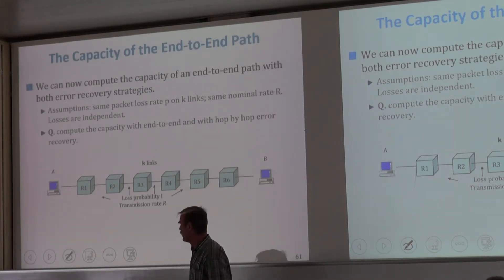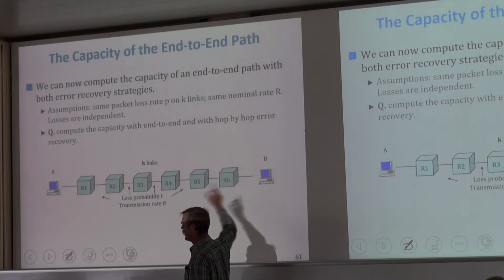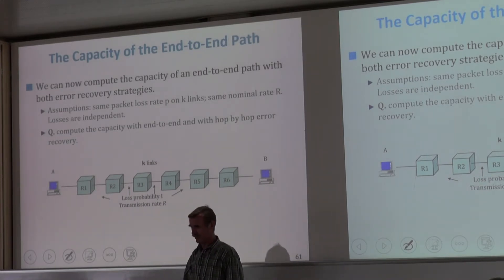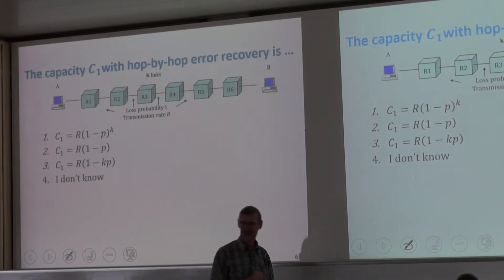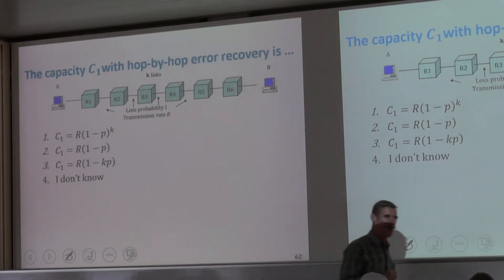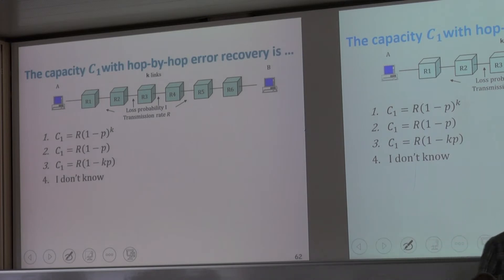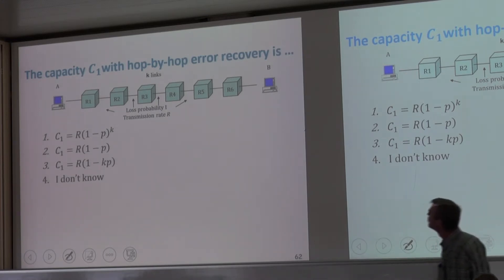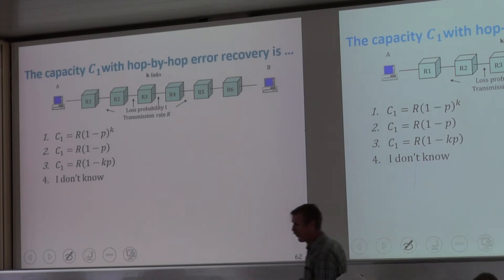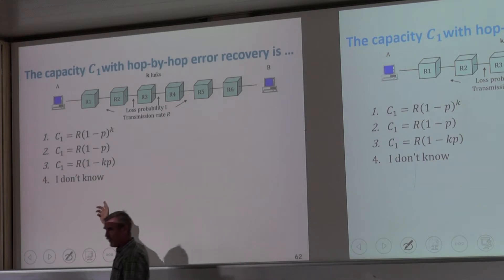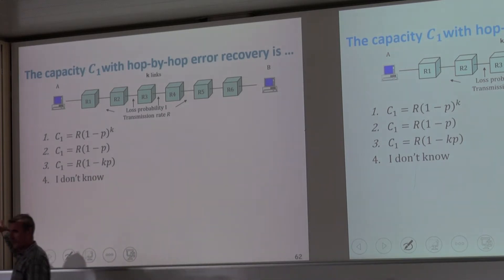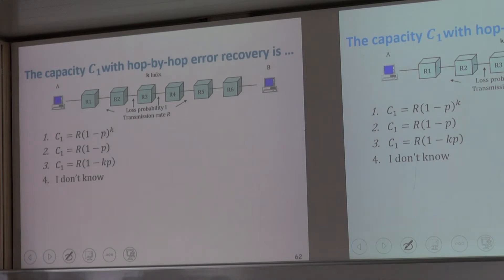What is the end-to-end capacity of this path from A to B? Let's start with hop-by-hop. Hop-by-hop means if a packet is lost between R2 and R3, which occurs with probability P, I will retransmit it from R2 to R3.